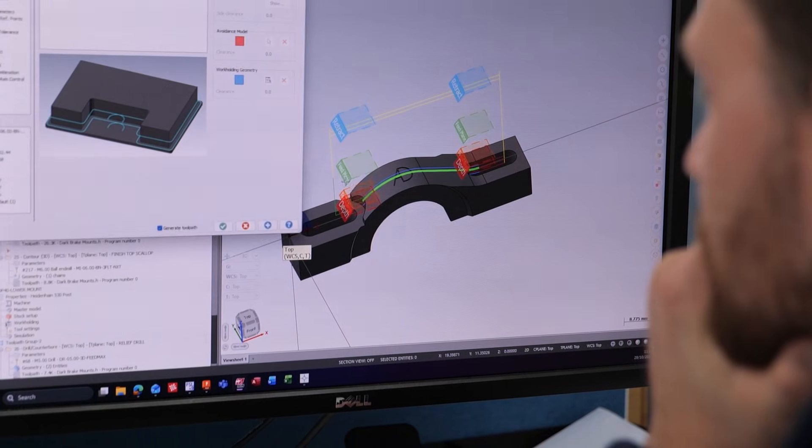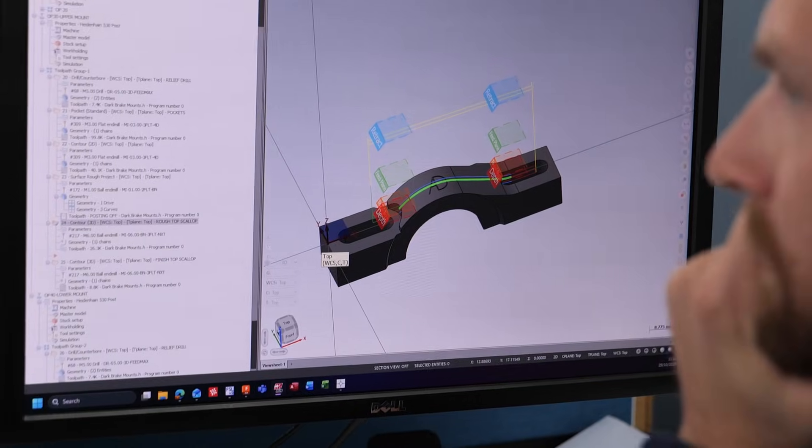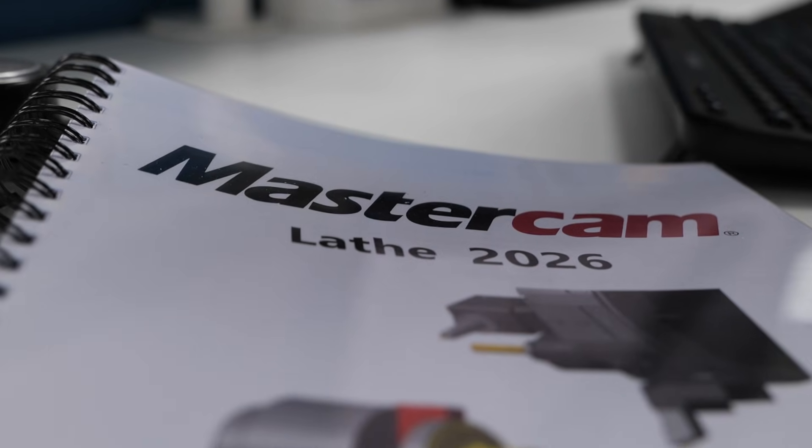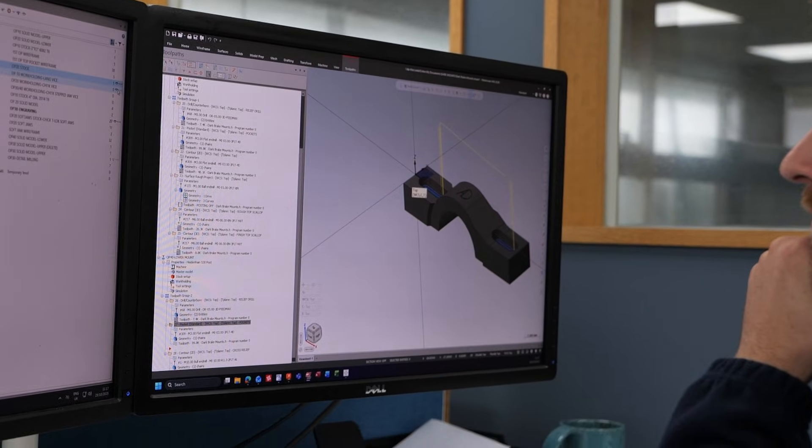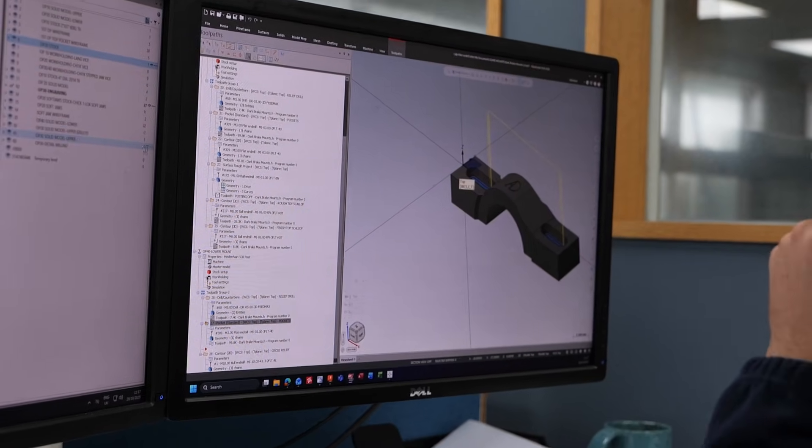I think the main advantage with Mastercam at the start was its ability to do pretty much everything you could do, the milling in one package. The reason I think we stayed with it is the constant development, the addition of these more complex machining strategies to suit the newer machines.